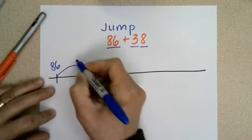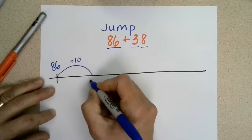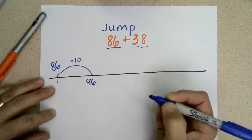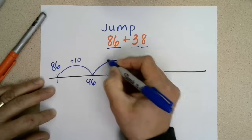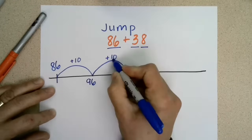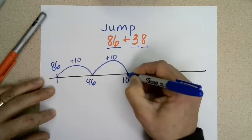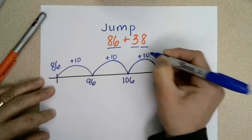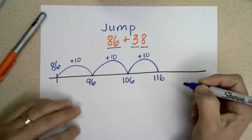The first thing I'm going to do is jump three tens starting from 86. I'll draw a jump, add plus 10, and write the number I jump to: 86 plus 10 is 96. I have three tens so I jump again — 96 plus 10 is 106. Then I add 10 again, which brings me to 116.